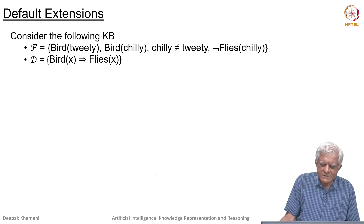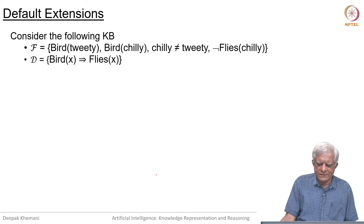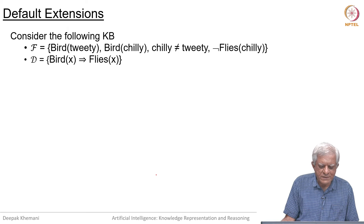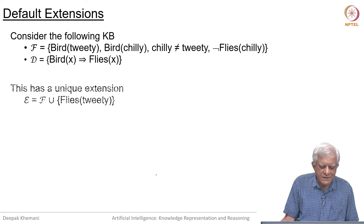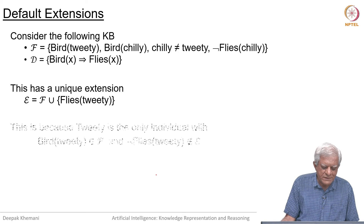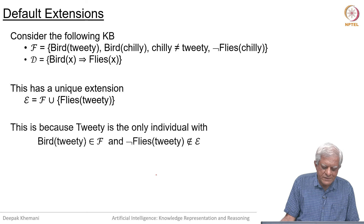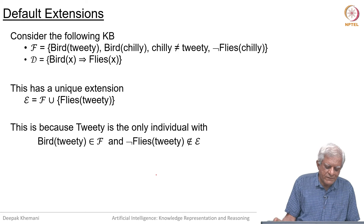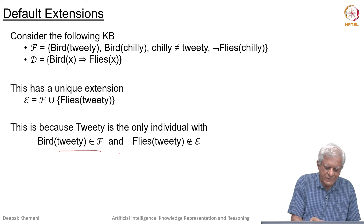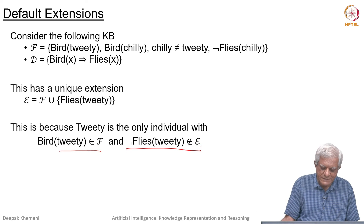Consider this theory: Chilli cannot fly, and both Tweety and Chilli are birds. This theory has a unique extension in which Tweety can fly, because Tweety is the only individual for which 'bird(Tweety)' belongs to F and 'flies(Tweety)' negated does not belong to the extension.